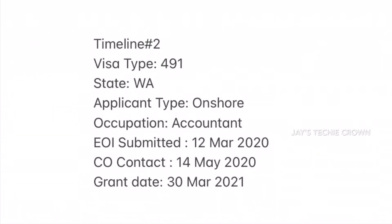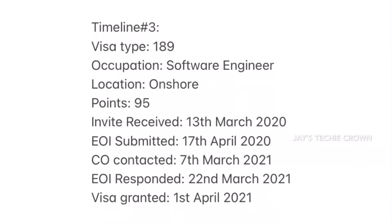Timeline 3 is for visa 189, software engineering category, onshore applicant, with 95 points. The invite was received on 13th March 2020 and the EOI was submitted on 17th April 2020. A CO contact occurred on 7th March 2021 — almost 12 months later — due to missing documents. The applicant responded on 22nd March and the visa was granted on 1st April 2021, with the entire processing taking about 13 months.